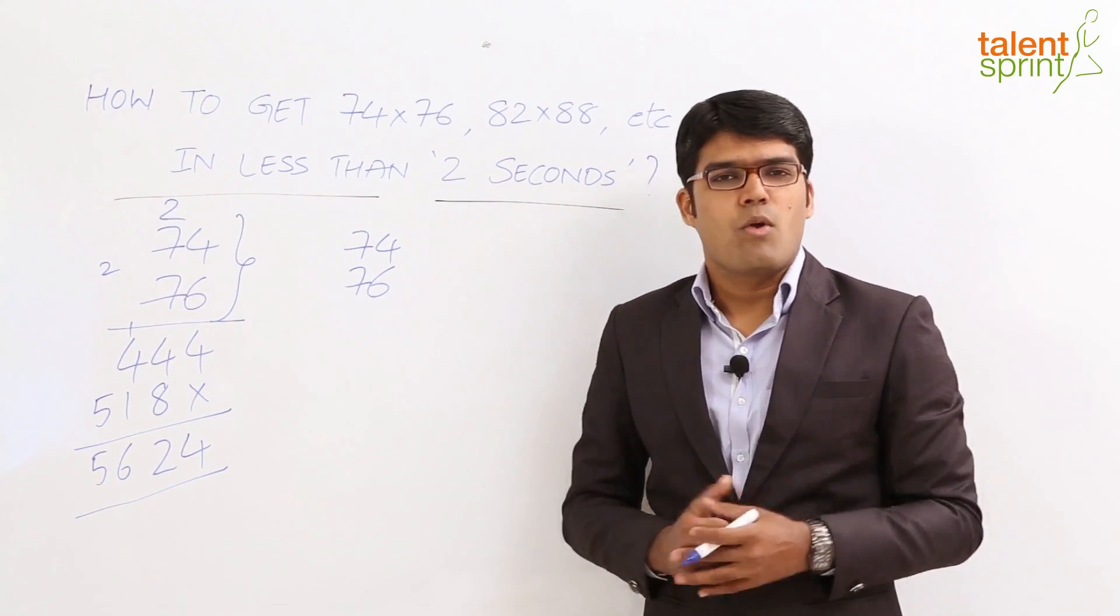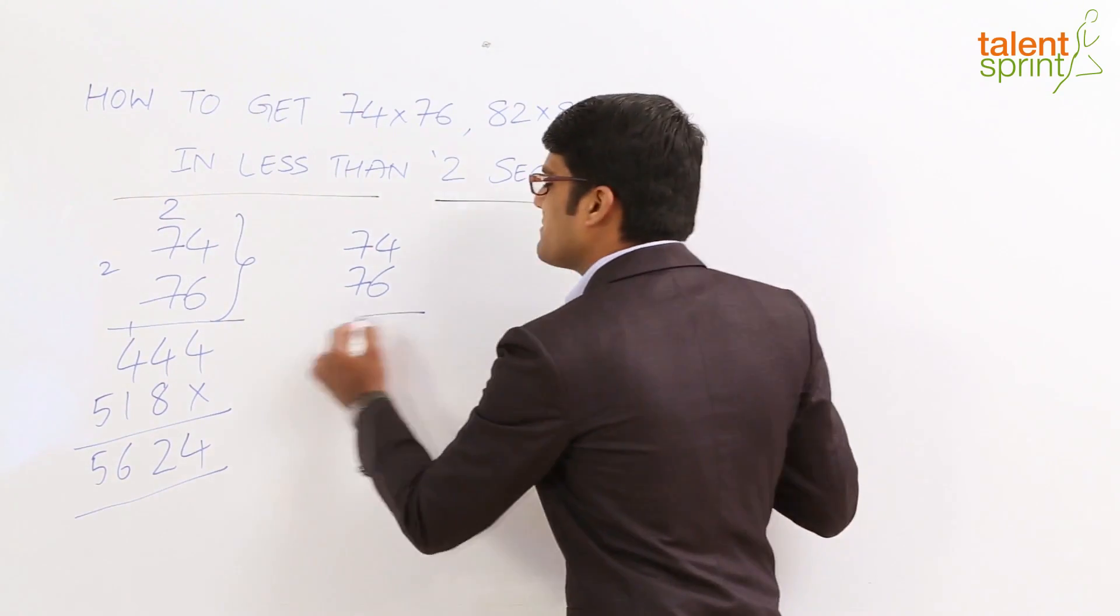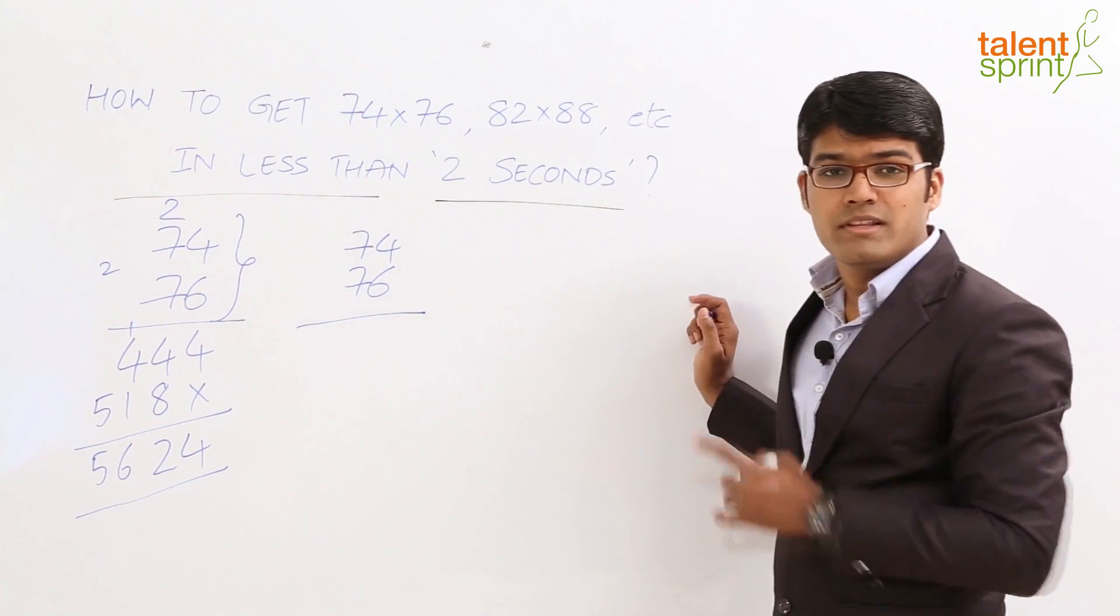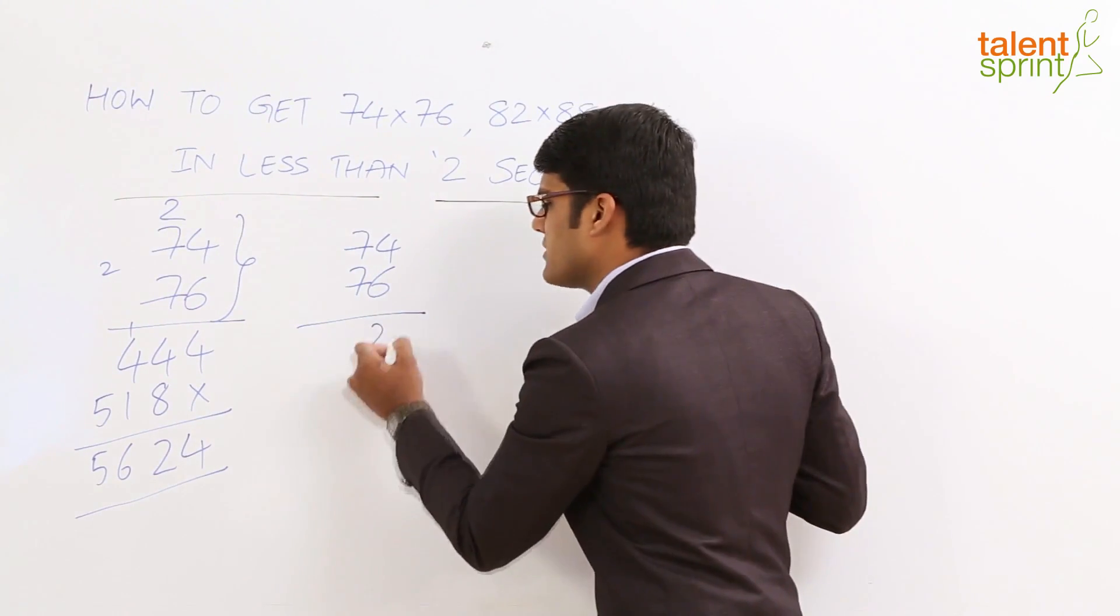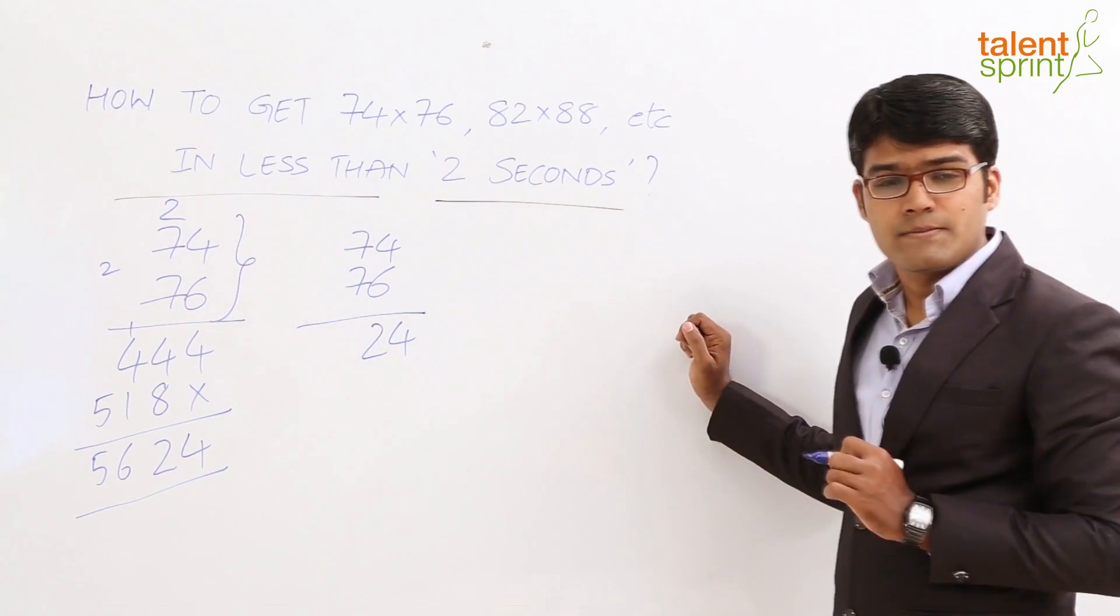Multiplying such numbers is a cake walk. All we need to do here is first multiply the unit places, that is 6 and 4. In this case 6 into 4 is 24, so that goes as part of our answer.